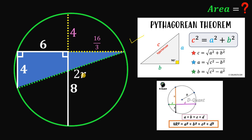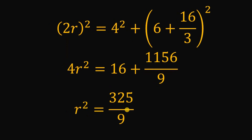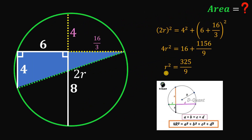Using the Pythagorean theorem: (2r)² = 4² + (6 + 16/3)². So 4² is 16, and (2r)² is 4r². Then (6 + 16/3)² equals 1156 over 9. Adding 16 and 1156/9, then dividing by 4, we get r² equals 325 over 9.